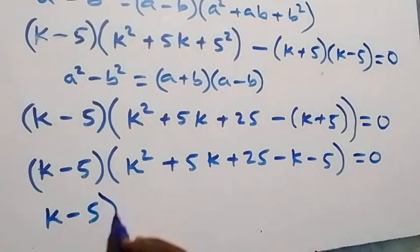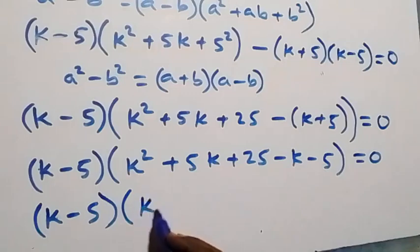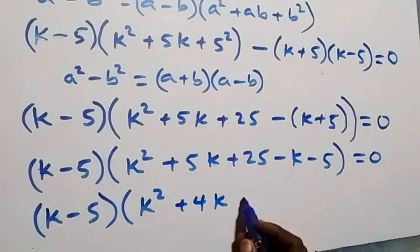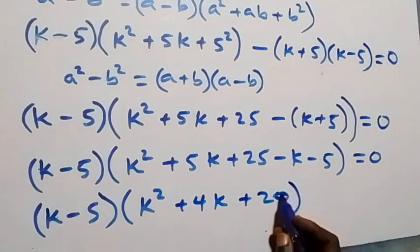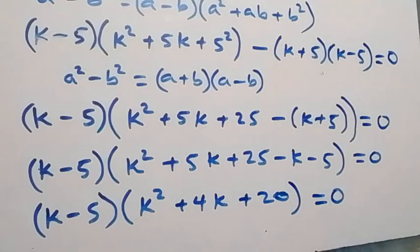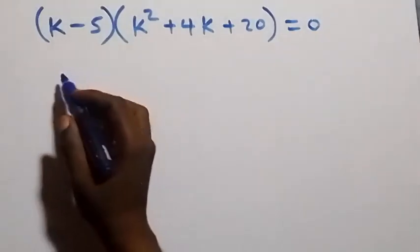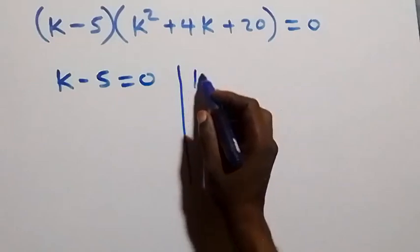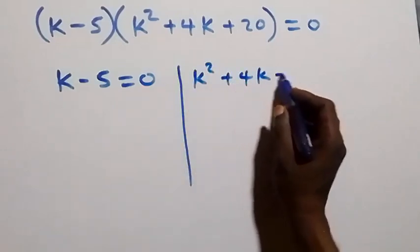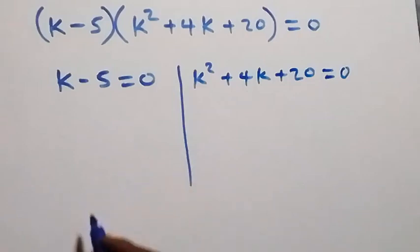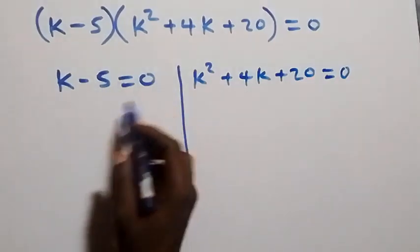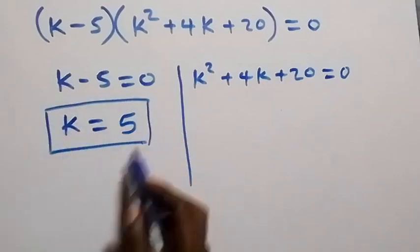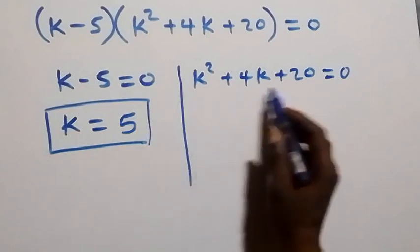Bringing terms together inside the bracket: we have k minus 5, times bracket k squared, then 5k minus k gives plus 4k, and 25 minus 5 gives plus 20, close bracket, equals zero. From this, k minus 5 equals zero gives us k equals 5. This is one real solution.